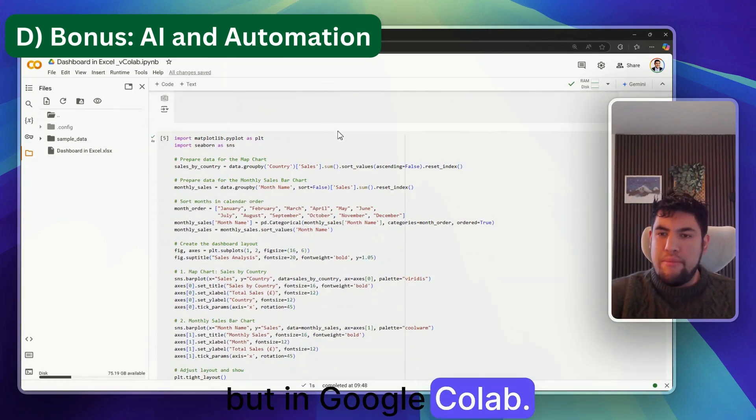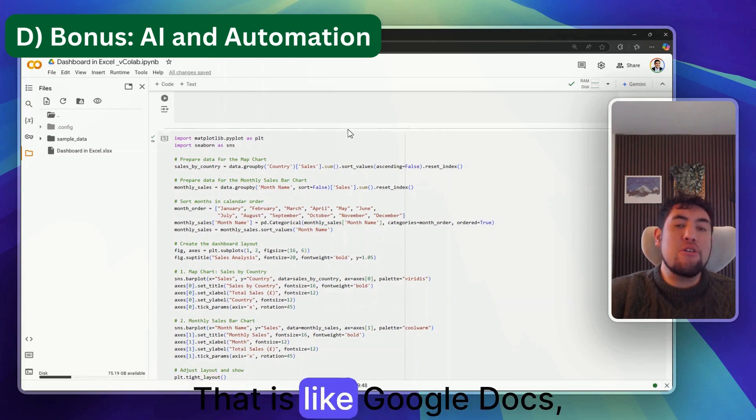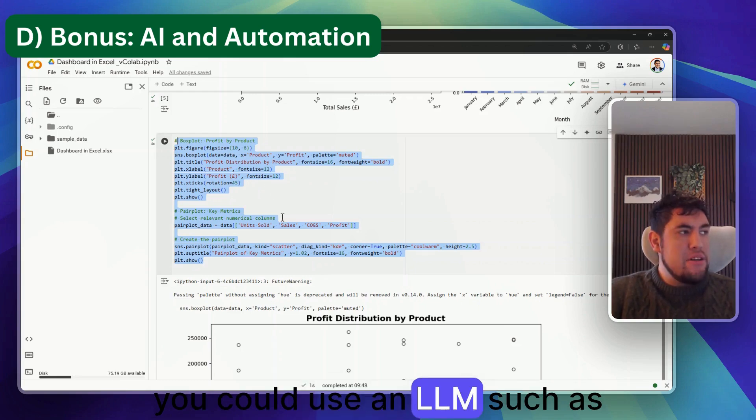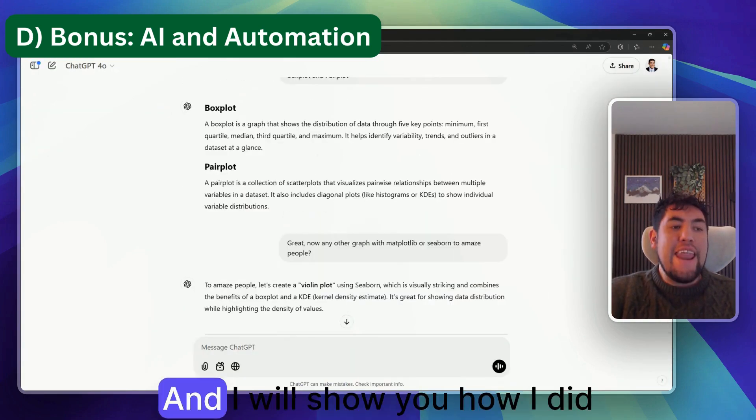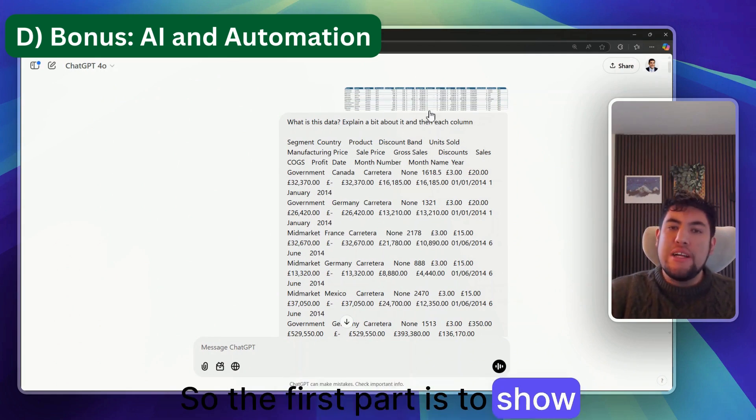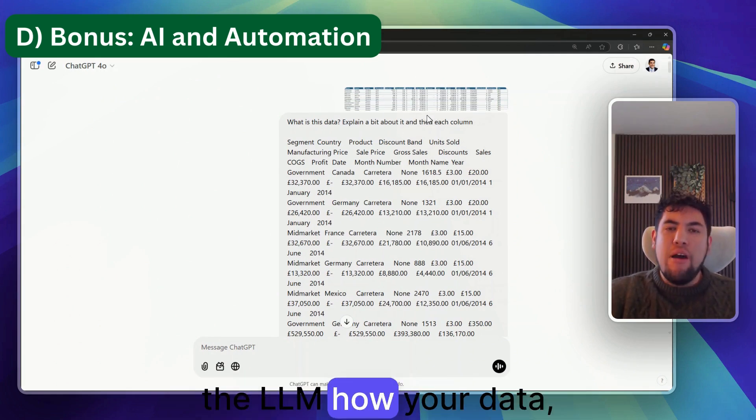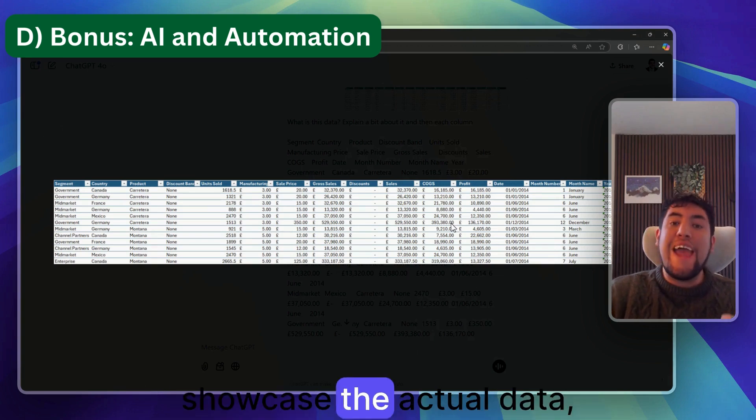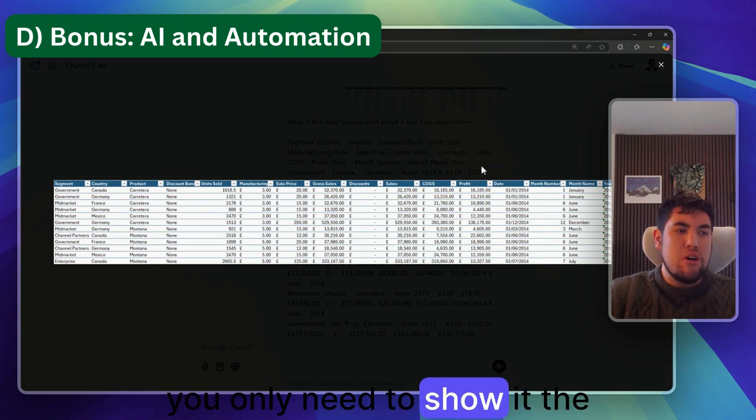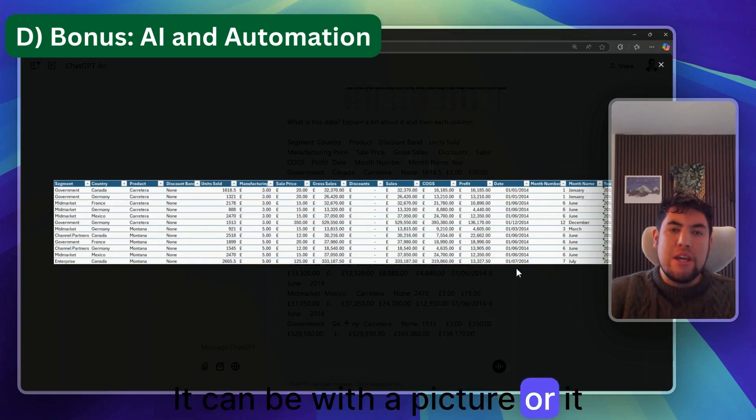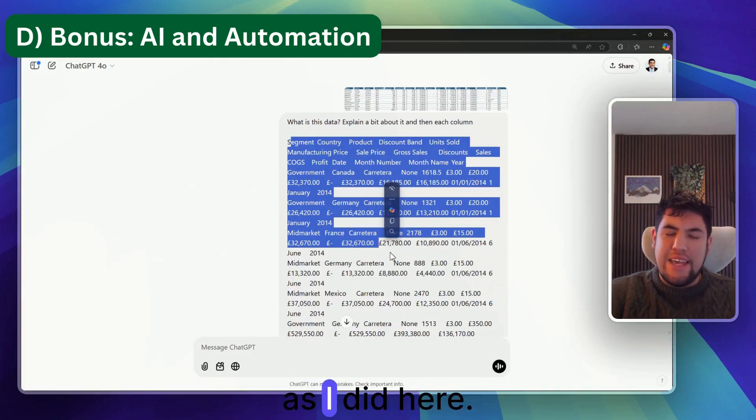In order to generate this code, you could use an LLM such as ChatGPT. I will show you how I did it. The first part is to show the LLM how your data looks like. You do not need to showcase the actual data, you only need to show it the structure of your data set. It can be with a picture or it can be by typing the actual data as I did here.